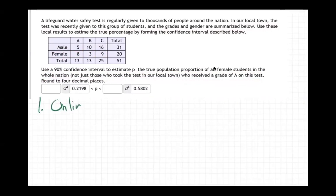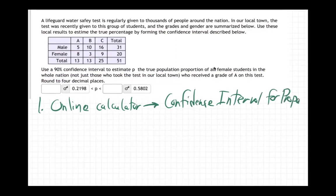Well, step one, we're going to go to the online calculator and we're going to do the confidence interval and choose the confidence interval for a proportion, because it says population proportion.